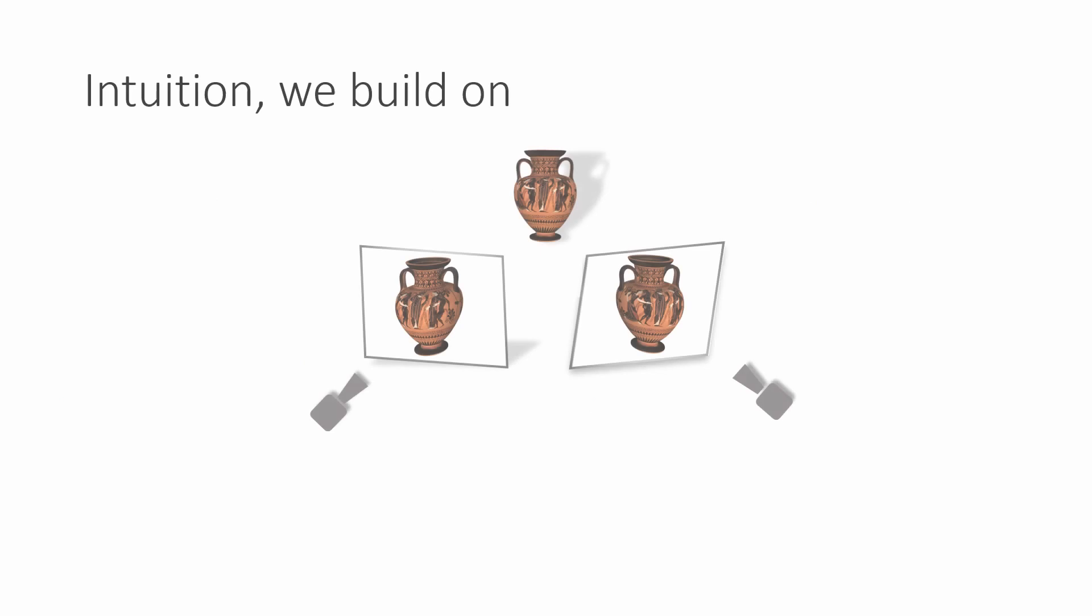We build our Stereo Radiance Fields based on an observation used in classical multi-view stereo approaches. Consider two views of a given scene. A point on the surface of the object is projected to the images and lands on similar regions. Such a point is called photoconsistent.